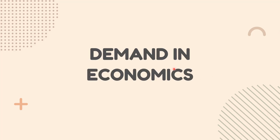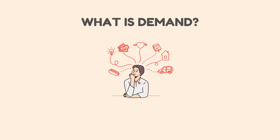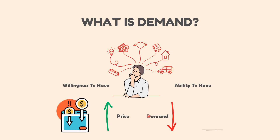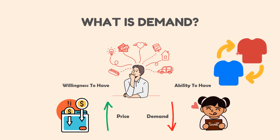Demand in economics is not merely a matter of desire, but of both willingness and ability to purchase a commodity at a given price. The relationship between price and demand is generally inverse, meaning that as the price of a commodity increases, its demand falls, and vice versa. However, other factors can influence demand, such as the consumer's income, taste and preferences, and the availability and price of substitute goods.